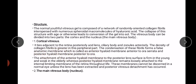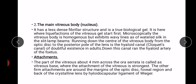The anterior hyaloid membrane is attached to the posterior lens surface in the young and is weak in the elderly, whereas the posterior hyaloid membrane remains loosely attached to the internal limiting membrane of the retina throughout life. These membranes cannot be discerned in a normal eye unless the lens has been extracted and posterior vitreous detachment has occurred.